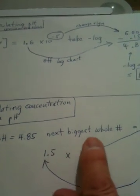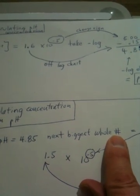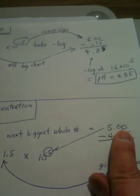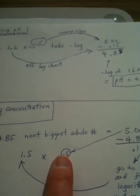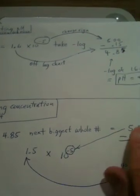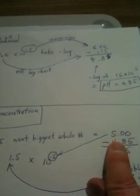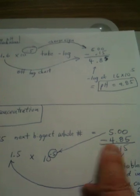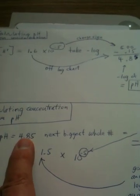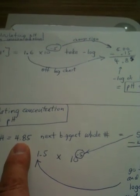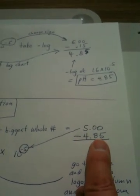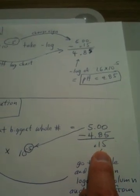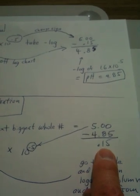So we're going to be given a pH of 4.85. Now, the next biggest whole number is going to be 5. So we take our 5, and that is going to be the starting of our calculation, and we subtract the actual log from 5. So the 4.85 is going to get subtracted,